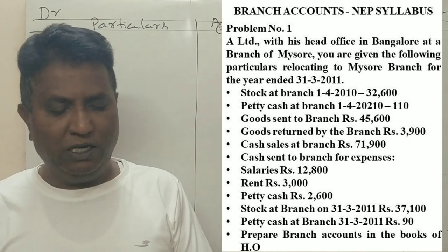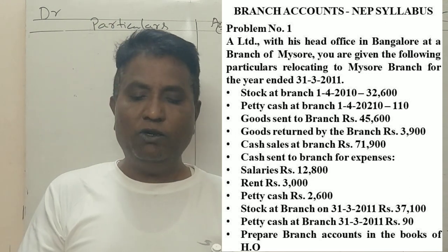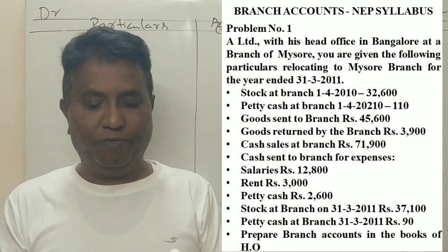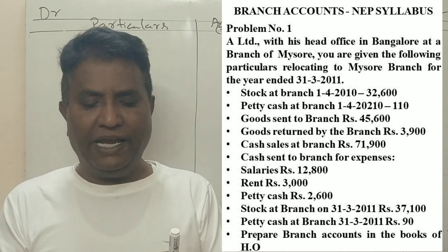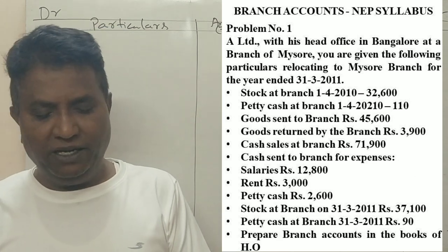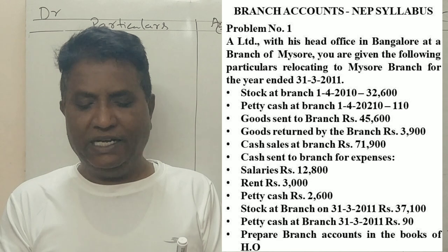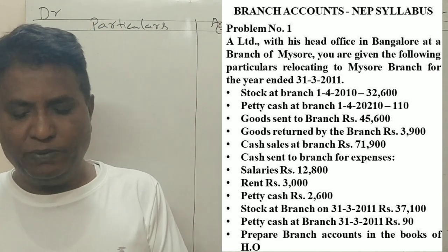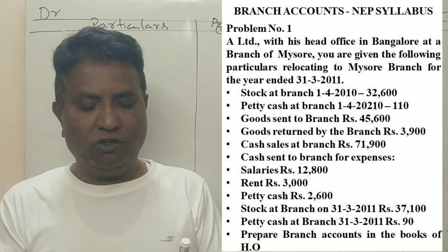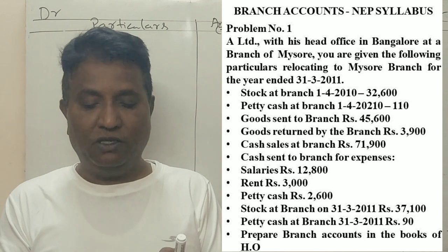The head office is in Bangalore, with a branch at Mysore. The following particulars relate to the Mysore branch for the year ending 31st March 2011: Stock at branch on 1st April 2010 — 32,600 rupees; petty cash at branch on 1st April 2010 — 110 rupees; goods sent to branch — 45,600 rupees; goods returned by branch — 3,900 rupees; cash sales at branch — 71,200 rupees.